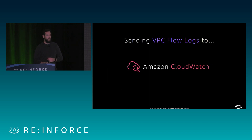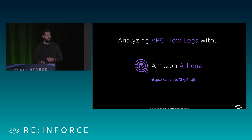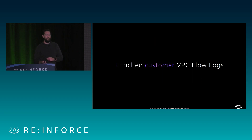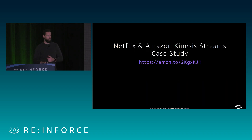Flow logs can be sent to Amazon CloudWatch, Amazon S3, and also queried with Amazon Athena. There are a couple of use cases around integrating with Athena. We also have customers that have taken flow logs and enriched them to get more visibility into the traffic going through their VPC. For example, Netflix took flow logs and enriched them for deeper visibility — there's a reInvent session and a public case study on that.